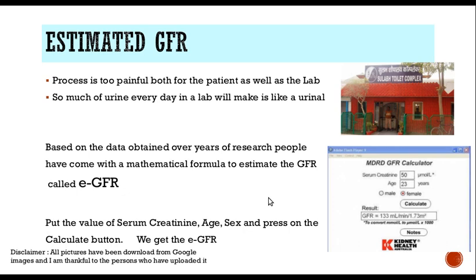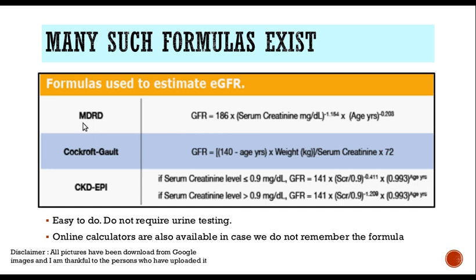These formulas are available online — we just have to feed the values, press calculate and we get the result, which is the estimated GFR. There are many such formulas: you have the MDRD formula, you have the Cockcroft-Gault formula, you have the CKD-EPI formula, and the formulas are given here. We don't really need to remember all these formulas; they are available online, you just feed the values and the eGFR comes. Nowadays this requires only one sample of serum — we are not even talking about the urine concentration — just based on the serum concentration we can get an estimated GFR. Nowadays GFR is calculated using the eGFR formula and very rarely do we resort to doing a complete clearance test.